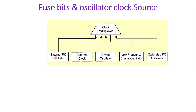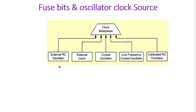We can either apply the clock source from an external RC oscillator to the microcontroller. We can also use an external clock, or we can go for a crystal oscillator which we need to connect on XTAL1 and XTAL2 pins of the AVR microcontroller. Then we have the low frequency crystal oscillator option. Finally, there is the calibrated RC oscillator, which is the internal RC oscillator provided inside the ATmega32. Now there are many options available, but how does the microcontroller know exactly from where it should take the clock?